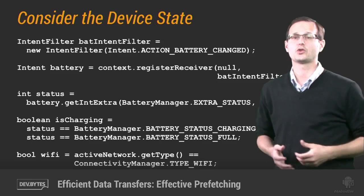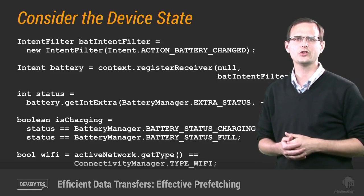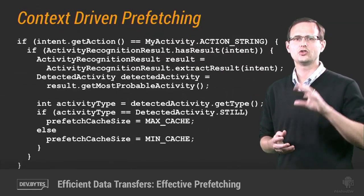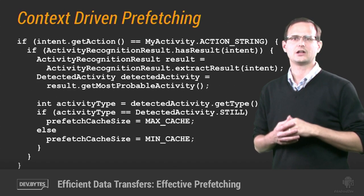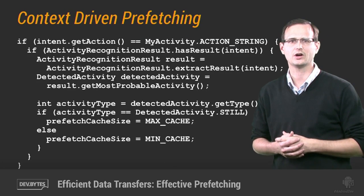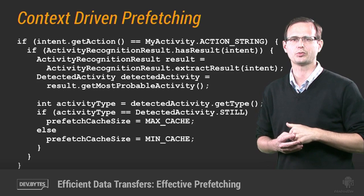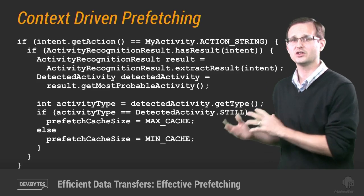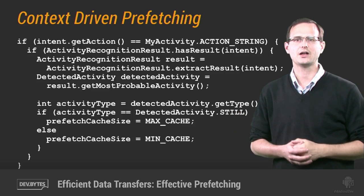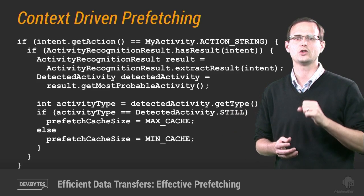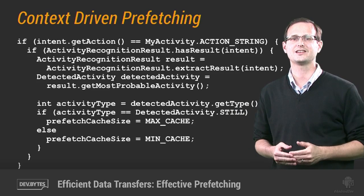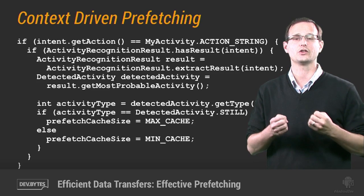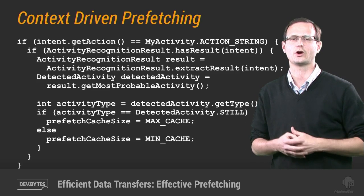And as long as you're monitoring the device state, why not take it a step further and track the current activity of the user? Using the new location-based services activity recognition API, you can modify the aggressiveness of your prefetching based on what the user is doing. In this example, we're going to increase the amount we prefetch when the user has the app open and is standing still — the assumption being that they're more likely to be browsing articles while stationary than if they're riding a bike.